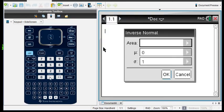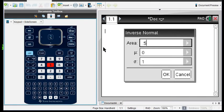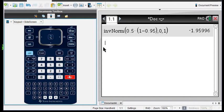I'm going to type in 0.5 times 1 minus 0.95, and I get negative 1.95996, and for this one, we round to two decimal places, so we're going to use negative 1.96.